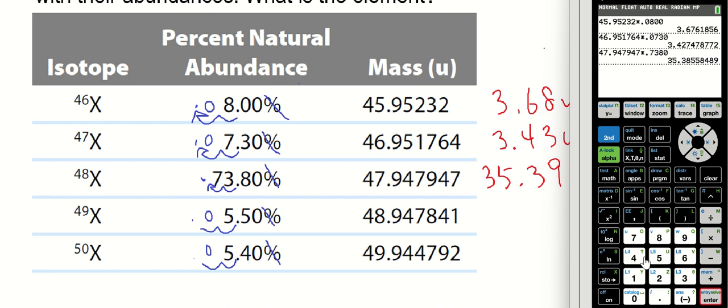All right, X-49 is 48.947841 times 0.0550. Right, again, this number is going to have three significant figures, so it's 2.69.